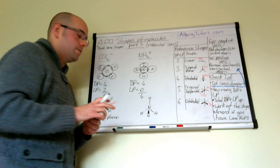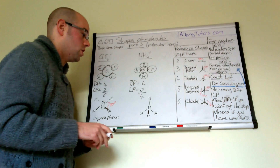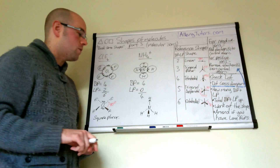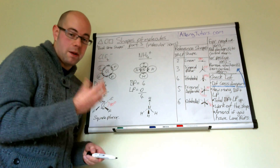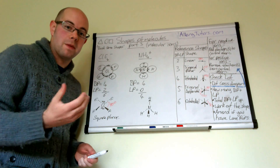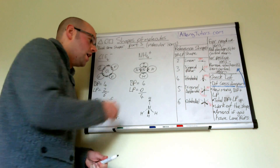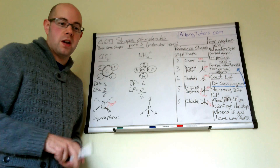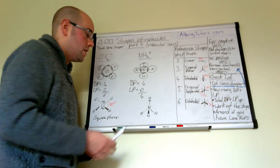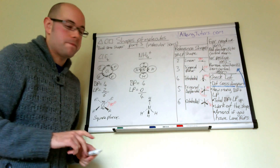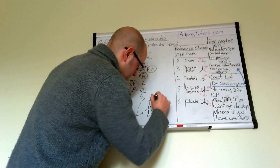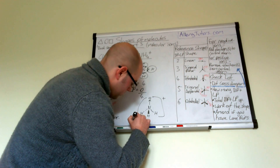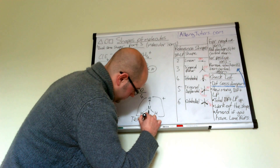This whole molecule is positively charged. In theory, one of these should be a dative covalent bond, and effectively what's happening is the nitrogen is donating both electrons. If you want to check up on that, there is a video that looks at dative covalent bonding — just click on the link below. So this whole molecule actually has a positive charge, and we call this tetrahedral.